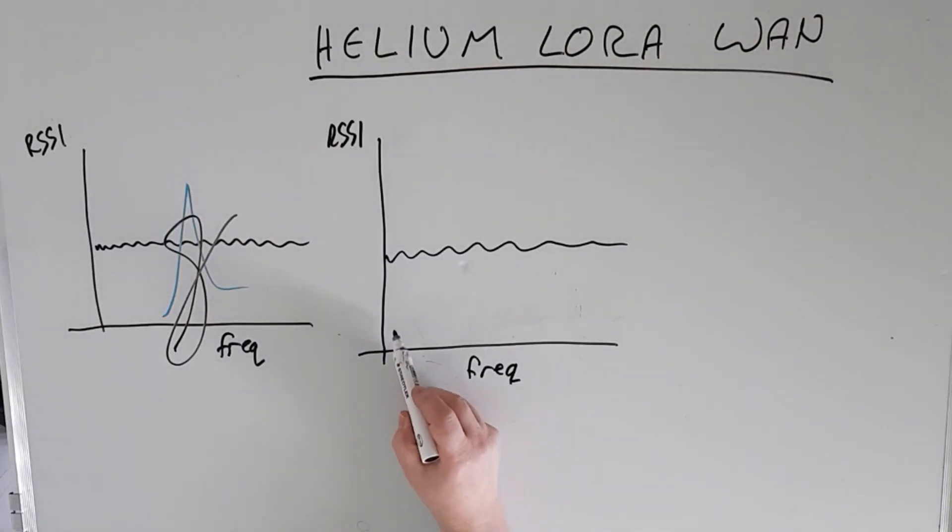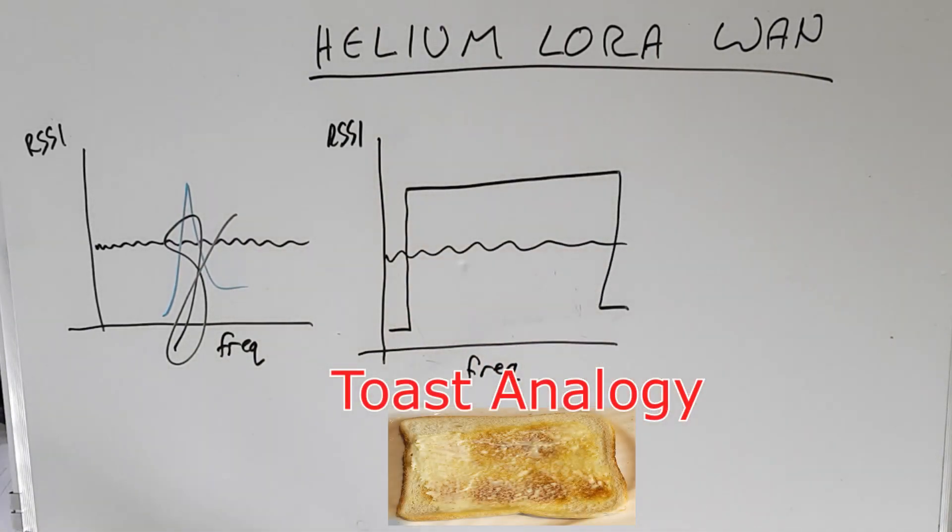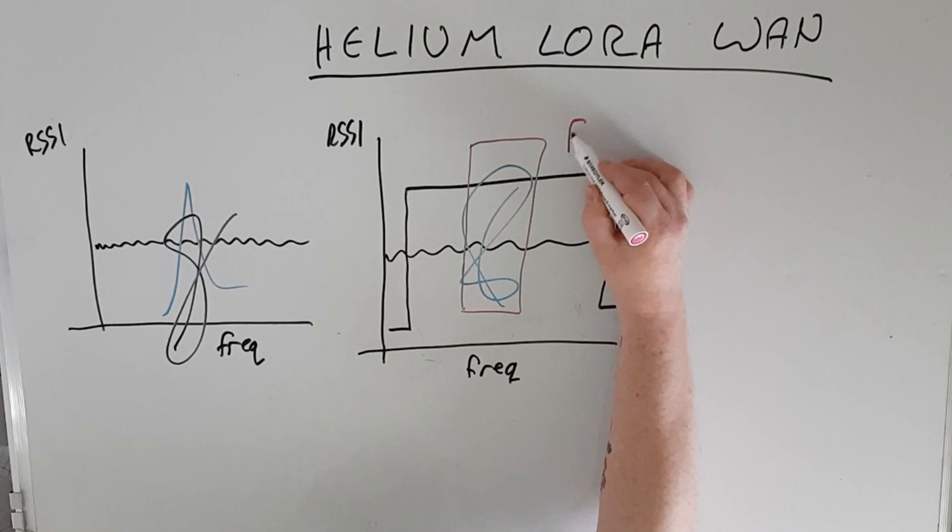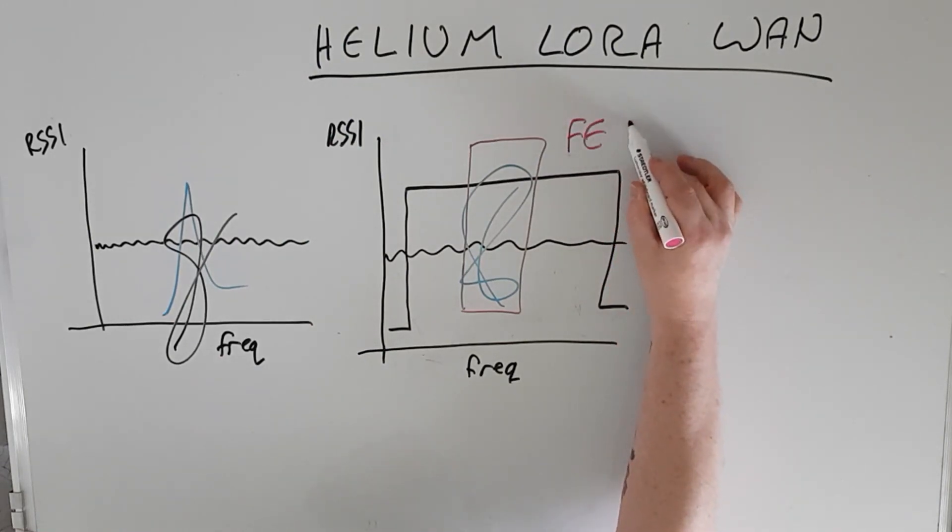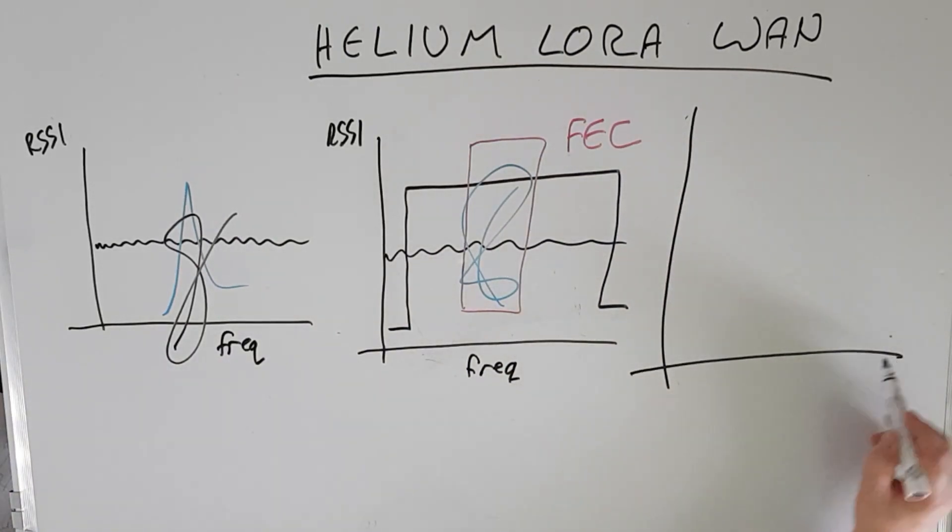So to combat this, we spread our signal over a much wider frequency range. So if that interference comes along again, it's no big deal because that portion of the signal can be recovered with the use of digital forward error correction techniques. Using these techniques we can receive and decode signals considerably smaller than the background noise levels.